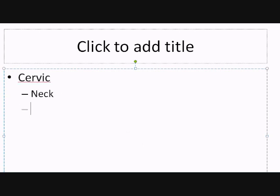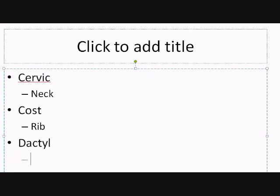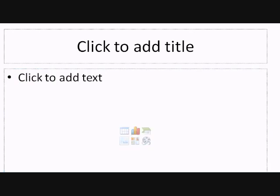'Cervico-' refers to the neck — we've already mentioned cervix a few times. 'Costo-' refers to the ribs. And 'dactyl-' is one we haven't talked about yet — it refers to the fingers or toes. So for example, 'dactylitis' would mean inflammation of the fingers or toes.